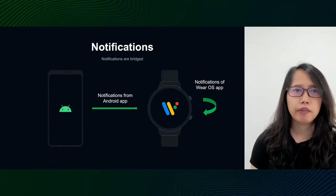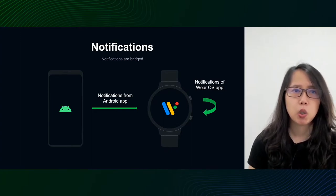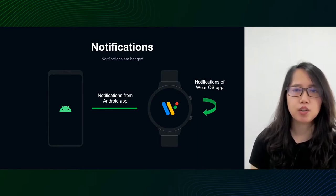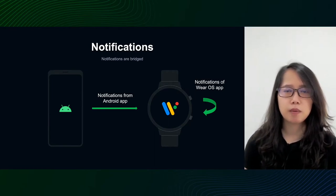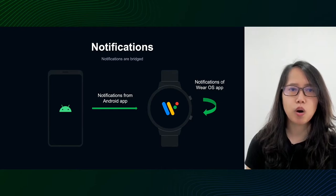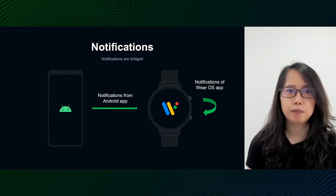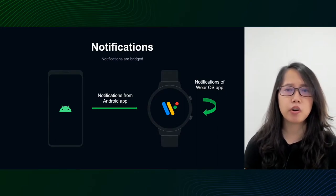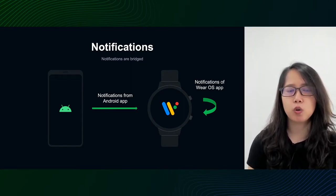Now let's check the challenge with notifications. Notifications on the watch use the same API and have the same structure as notifications on the phone. Notifications can appear on a WearOS watch in two ways. First, a mobile app creates notifications and the system automatically bridges them to the watch. Second, the WearOS app creates a notification itself. This mechanism may cause duplicate notifications on the watch. In the Live app, if the phone and watch are logged into the same account, the user can be confused and frustrated. So on the WearOS app, we have to decide when notifications should be shown.